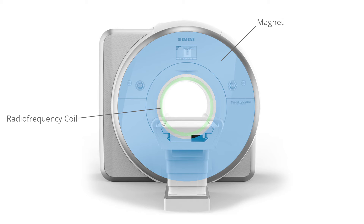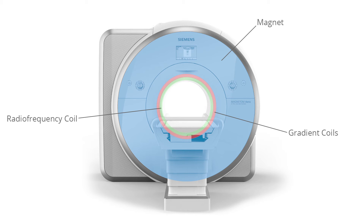As they do, the protons re-emit the energy that they absorbed from the pulse, and this signal is detected by the same radiofrequency coil. The gradient coils are switched on and off rapidly in a controlled sequence to locally perturb the main magnetic field, enabling spatial encoding of the signal such that thin slices can be imaged in any orientation and any location within the body.